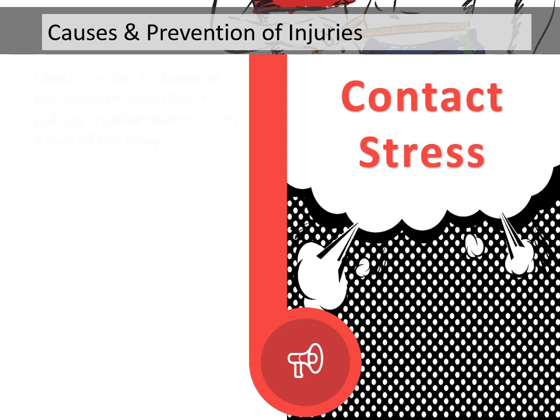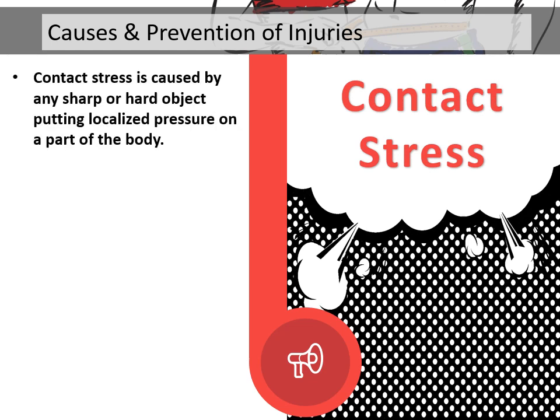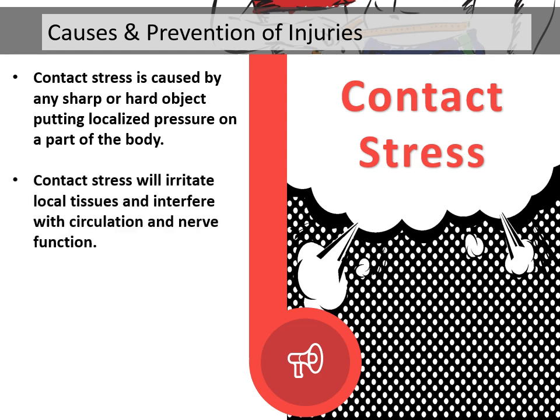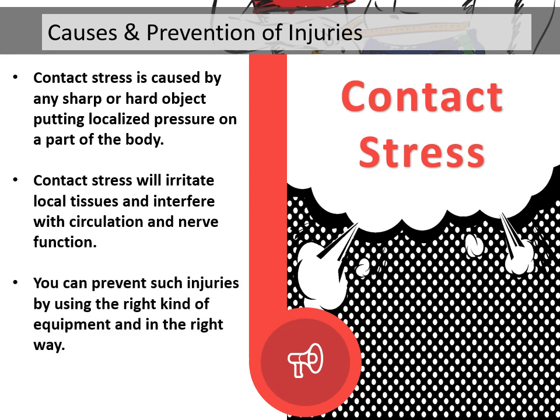Contact stress is caused by any sharp or hard object putting localized pressure on a part of the body. Contact stress will irritate local tissues and interfere with circulation and nerve function. You can prevent such injuries by using the right kind of equipment and in the right way.